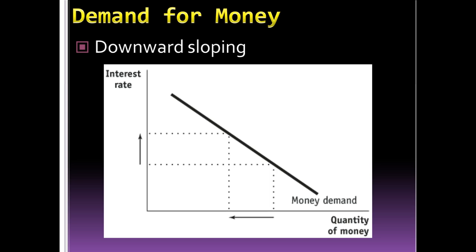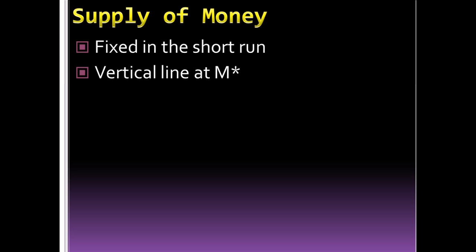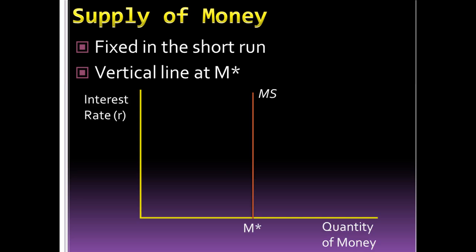When it comes to the supply of money, the supply is fixed in the short run by the Federal Reserve. So when we draw it on the graph, it's going to be a vertical line, fixed no matter what the interest rate is. The Federal Reserve determines what the money supply should be, and that's what it is.